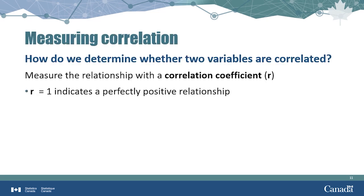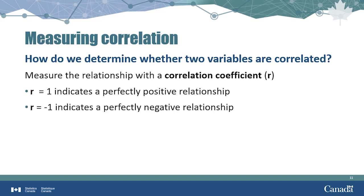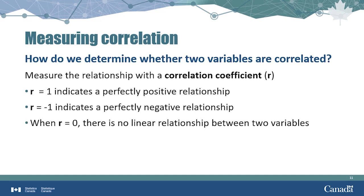When r is equal to 1, we are saying that two variables have a perfectly positive relationship, meaning the two variables always increase or decrease together. When r is equal to negative 1, the variables have a perfectly negative relationship, meaning one variable always increases while the other decreases. Finally, when r is equal to 0, there is no linear relationship between the two variables.